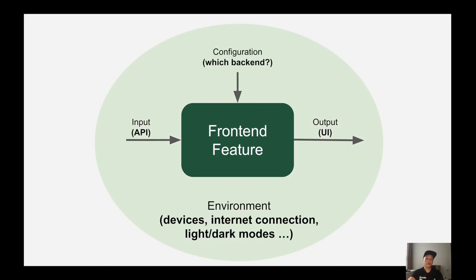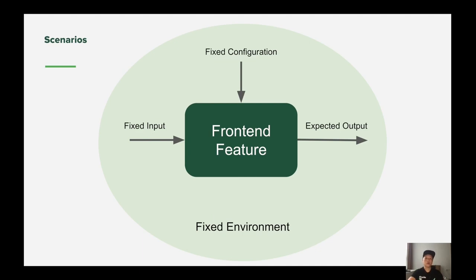But for the development team, they have to take into consideration many other factors such as which backend the feature is connecting to — development, staging, or production — which device with which hardware features, whether it is connected to the internet, whether it is running in light or dark user interface, and so on. That means the feature can be executed in very different scenarios, which are combinations of many different inputs. So to simplify the requirement, we define a scenario for our feature by fixing the dynamic factors so that we can deliver the expected output for a set of predefined inputs and configurations.